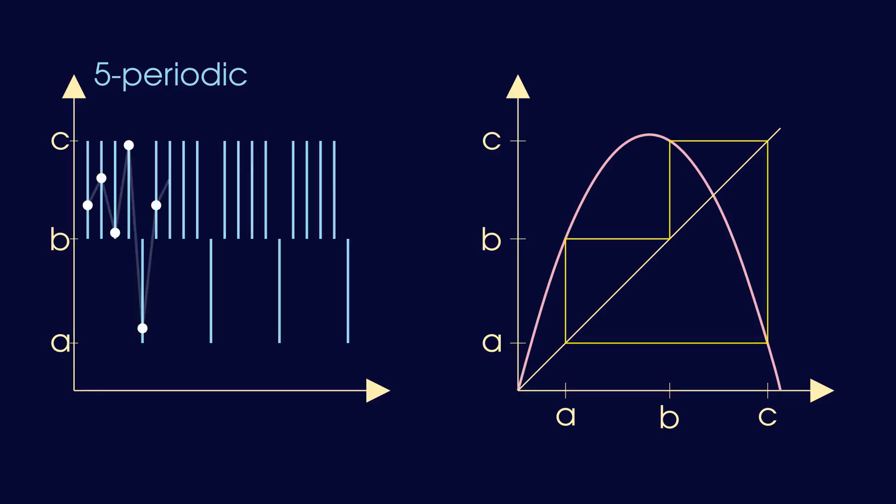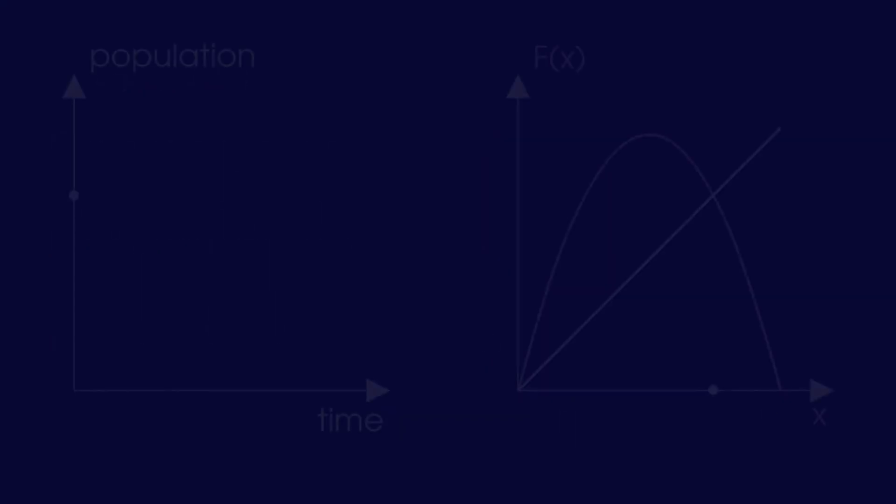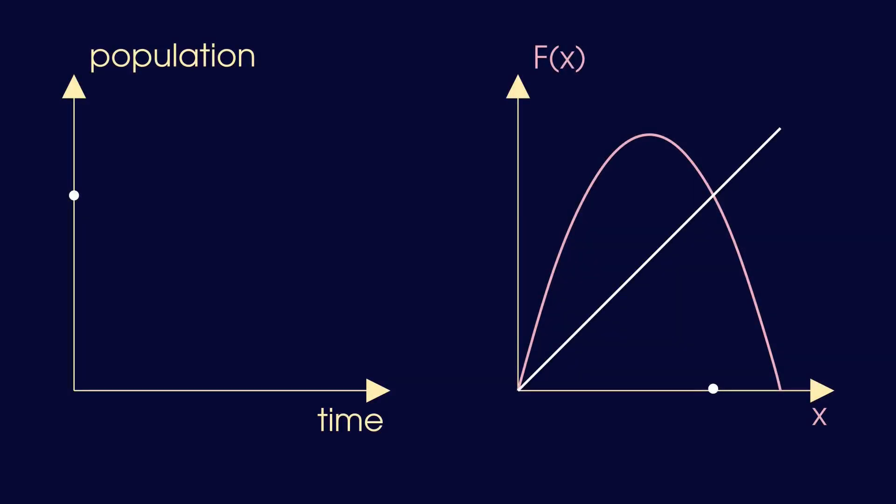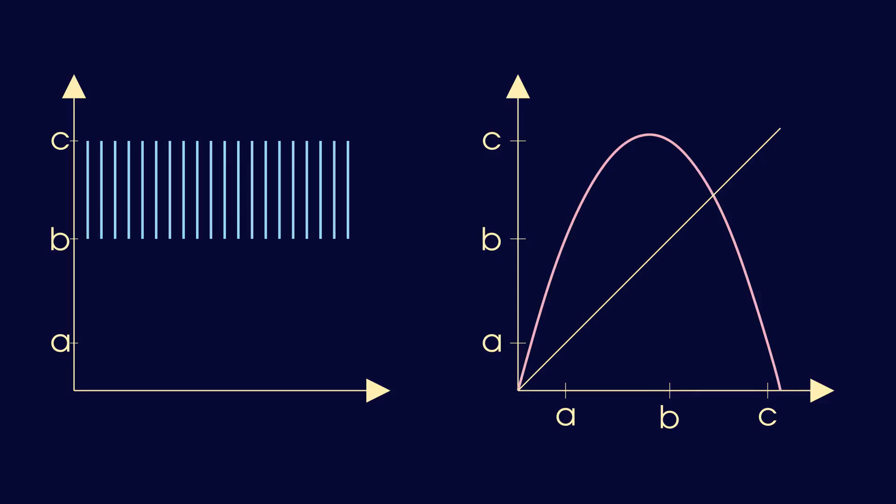Let's illustrate this first by constructing the constant solution. The constant solution can be found as the intersection of the logistic function with the diagonal. But we can also find it using a barcode, if we go back in time. At the final time, any point in the interval bc would do. So to see what values are acceptable at the penultimate time, we look for the values that get mapped into bc by the iteration. We see that there are two intervals of input values that give outputs in bc.